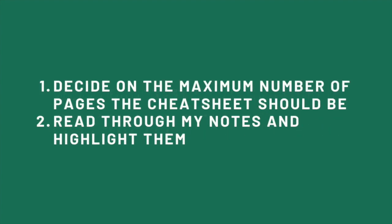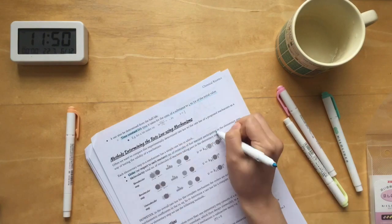So when making cheat sheets, the first thing I'll usually do is read through my notes and highlight them using a color code. I personally use the following one.